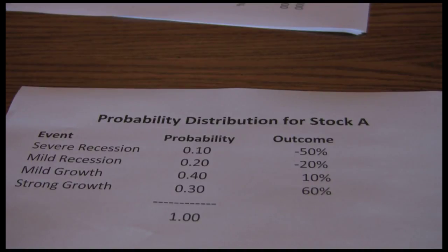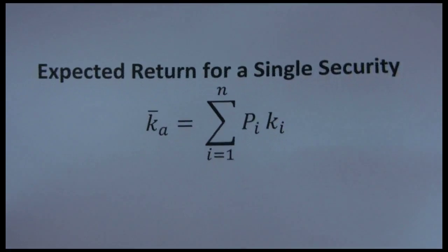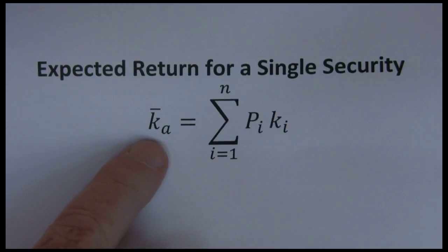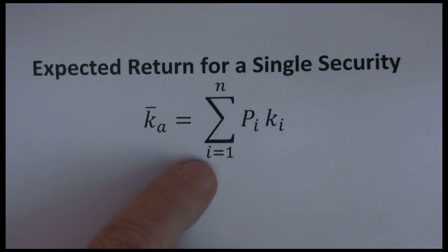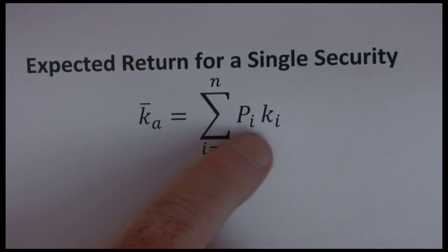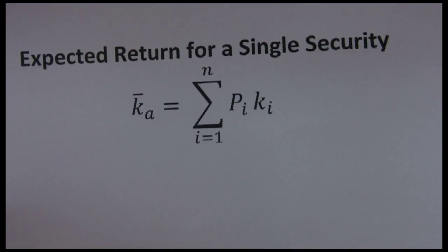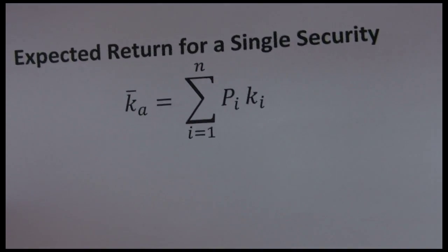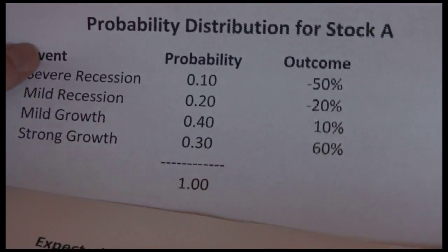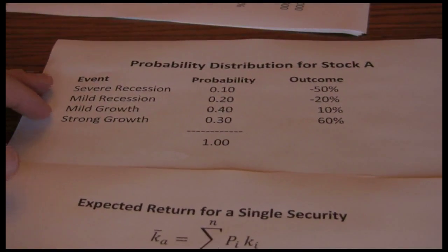So we're going to walk through both of those. Let's start with expected return. The formula for expected return, and see this K bar sub A is just the expected return for stock A, is the summation of all possible outcomes, probability times outcome. Now the formula can intimidate people looking at that big Greek summation sign, but it's really not that difficult if we see it in practice. So let's start with our probability distribution and move that over into an expected return format.